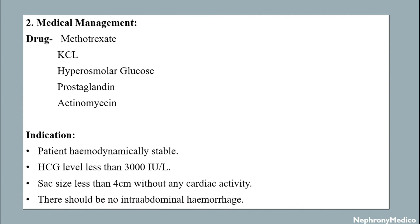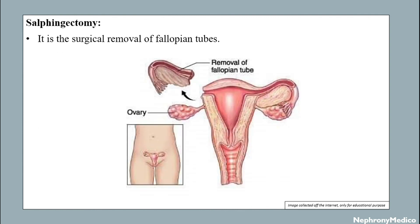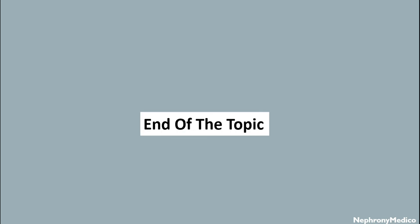Surgical treatment is done if the case does not fulfill criteria for medical therapy, beta-hCG levels are not decreasing despite medical treatment, or there is persistent fetal cardiac activity. Options include linear salpingotomy, segmental resection, fimbrial expression, and salpingectomy. Salpingectomy is the surgical procedure for removal of the fallopian tube. End of topic.